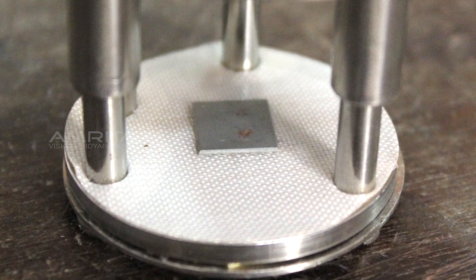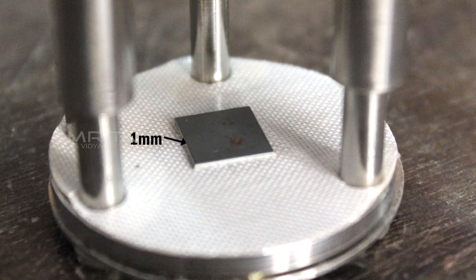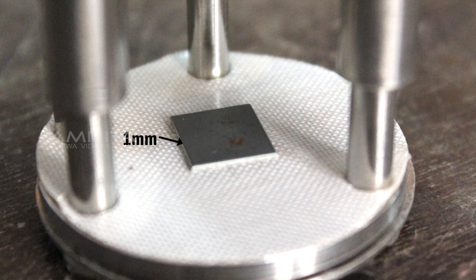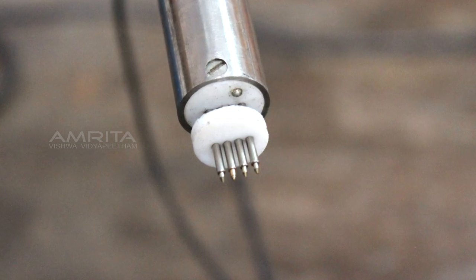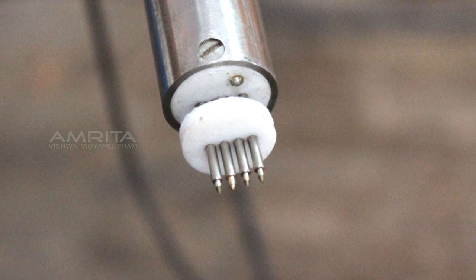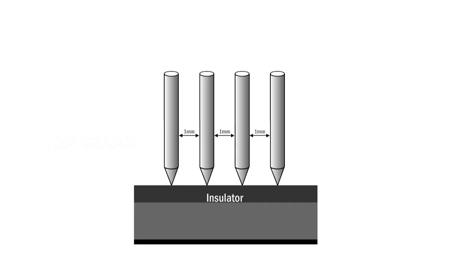In 4-probe arrangement, the 4 probes are arranged linearly in a straight line at equal distance, say 1 mm from each other.